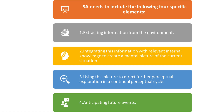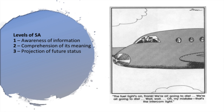Situational awareness is a critical skill involving four key elements. One: extracting information — it starts with gathering data from the environment, observing changes, and identifying relevant cues. Two: integrating knowledge — the information is then combined with existing knowledge to form a mental picture of the current situation. Three: perceptual exploration — this mental model helps guide continuous observation and understanding of the environment. Four: anticipating events — finally, it involves predicting future events based on the current understanding, allowing proactive responses. These elements form a dynamic, ongoing process for maintaining awareness.